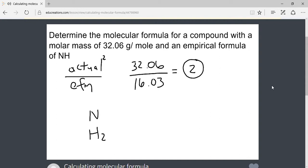The whole number 2 relates these two masses and these two formulas. The empirical formula can be turned into the molecular formula by multiplying by this whole number. Therefore, the actual formula is N2H4. Our molecular formula is N2H4.